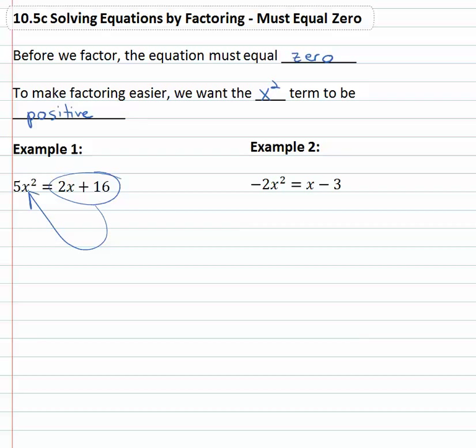Or we'll move the 2x plus 16 over to the left and that will keep the x squared term positive. So what we need to do is subtract 2x and subtract 16, doing the opposite operation. That will make it equal to zero, but if we do it to one side we have to do it to the other side. Subtract 2x and subtract 16.